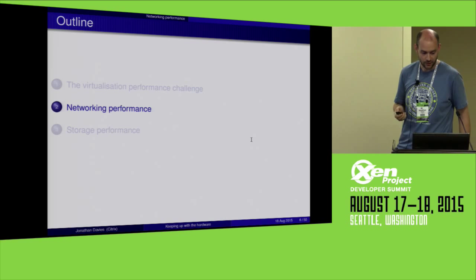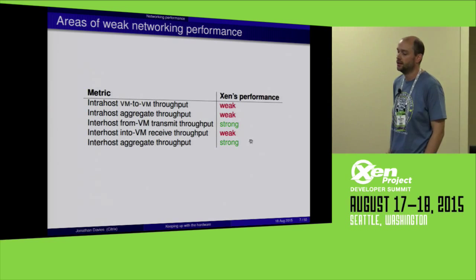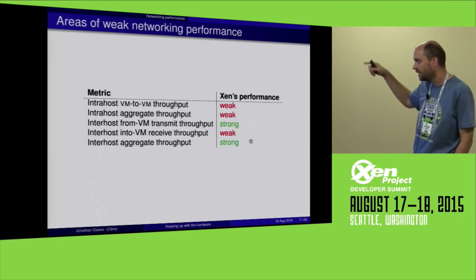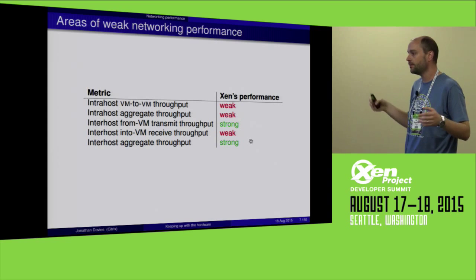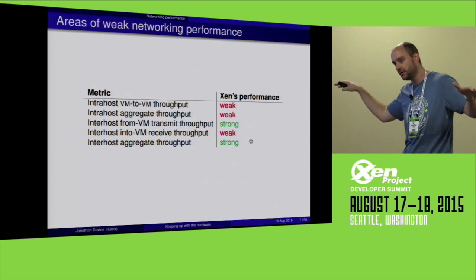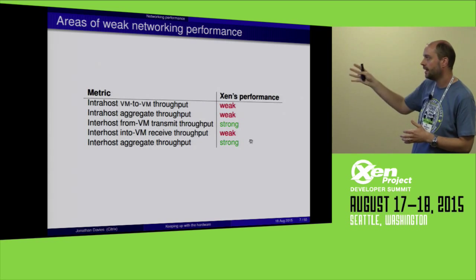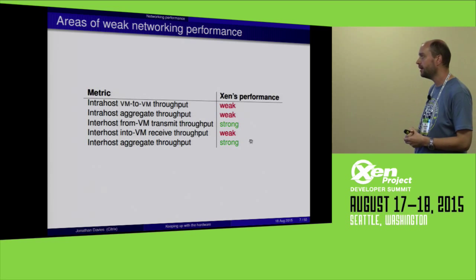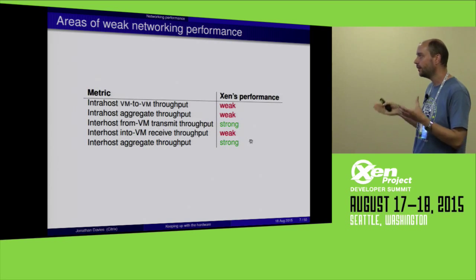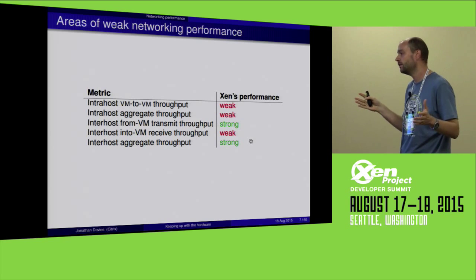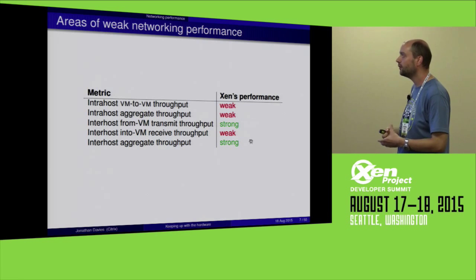Let's see how that plays out in the space of networking first. There are various different ways to talk about networking performance — VMs on the same host, VMs on different hosts, one VM or many VMs. I've got five categories here, and I'm being a little provocative in saying whether Xen performs well or badly. I know there are lots of other factors involved, but this is my judgment of Xen's performance.